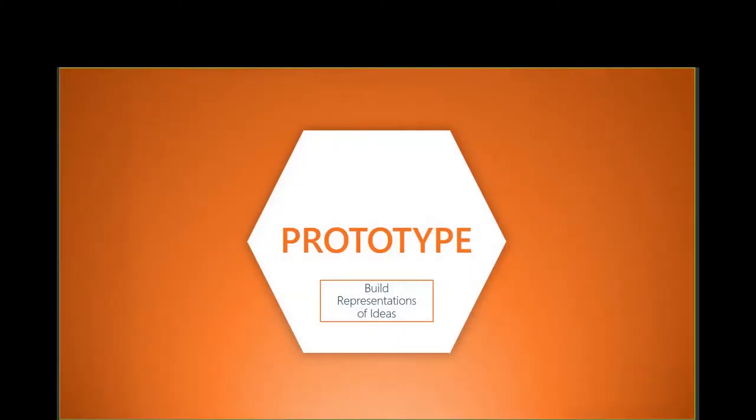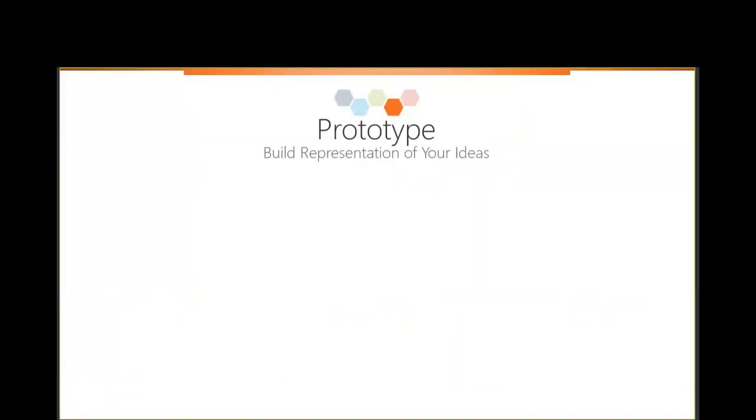In the Prototype phase, we have understood our learners, defined the problem statement, turned it into a how might we question, come up with a number of ideas, plotted them against the prioritization matrix, and identified what we call our stars — the areas we want to focus on. Now we're ready to take those ideas and move them forward into the prototype phase where we build quick representations of those ideas.